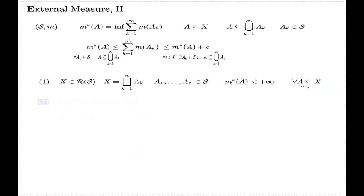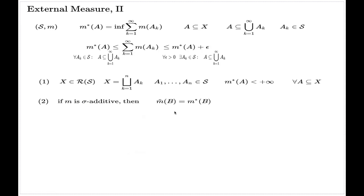The second property is this: if your original measure M is sigma-additive — remember, M originally was just a measure with no further requirements — then M̃(B) equals M*(B) for every element of the minimal enveloping ring. M̃ denotes the extension of measure M onto the minimal enveloping ring, which is a unique and sigma-additive extension. M* is the external measure. So the statement says: if the original measure is sigma-additive, then on the minimal ring enveloping S, the external measure coincides with the natural extension of the original measure.